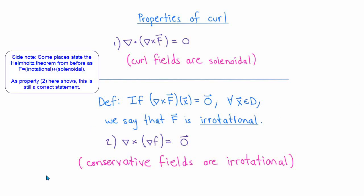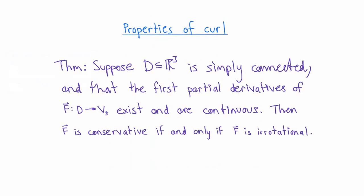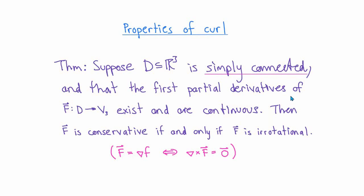You might wonder if there's a converse: is every irrotational vector field in R3 also conservative? In general the answer is no. However, with a mild assumption on the domain D — that it is a simply connected open set — and assuming the first partial derivatives of F exist and are continuous, we get a full equivalence: F is conservative if and only if it is irrotational.